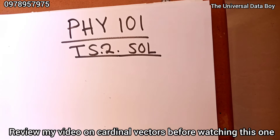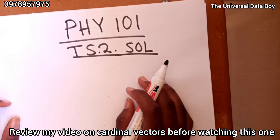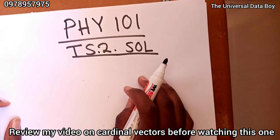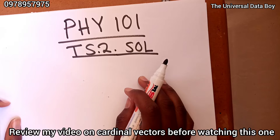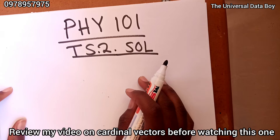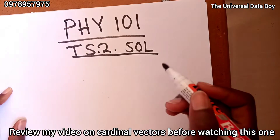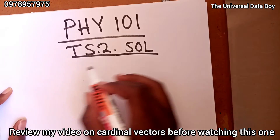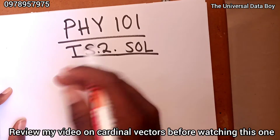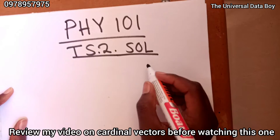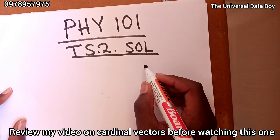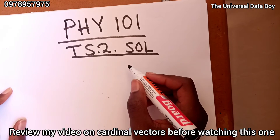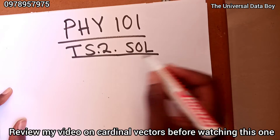I'm going to be going over question 4 of stroke 2. If you've not seen the tutorial sheet, I think you can check it out from your friends. And then if you've not studied vectors, and if you've not watched my previous video on how to draw cardinal vectors, you'll actually find this hard. So go to my previous video and you'll see how you can find cardinal vectors, and then you'll be able to come up to this one.